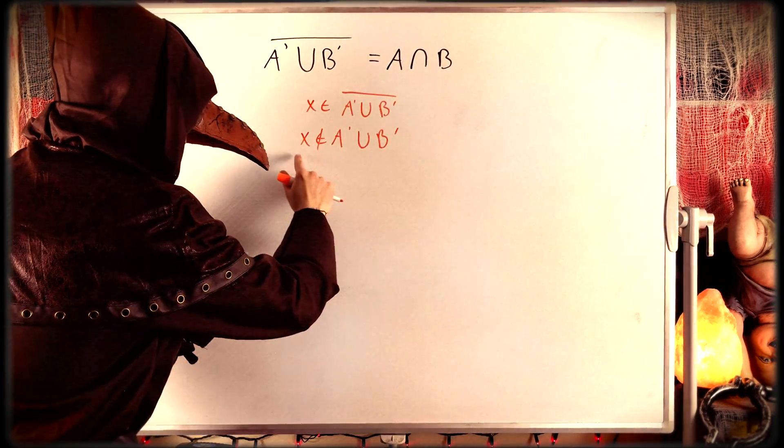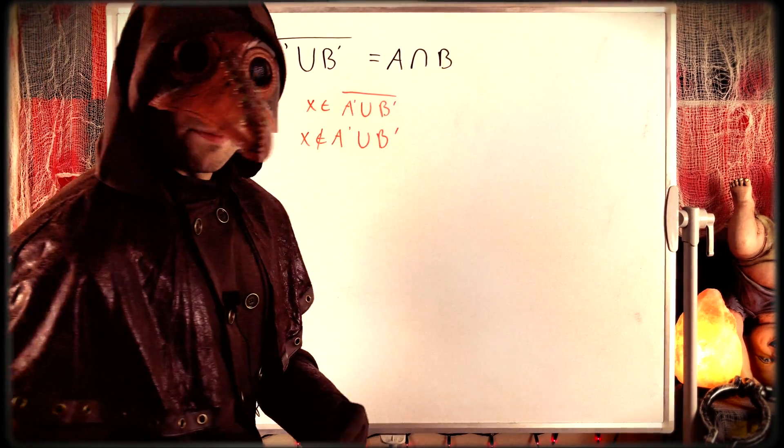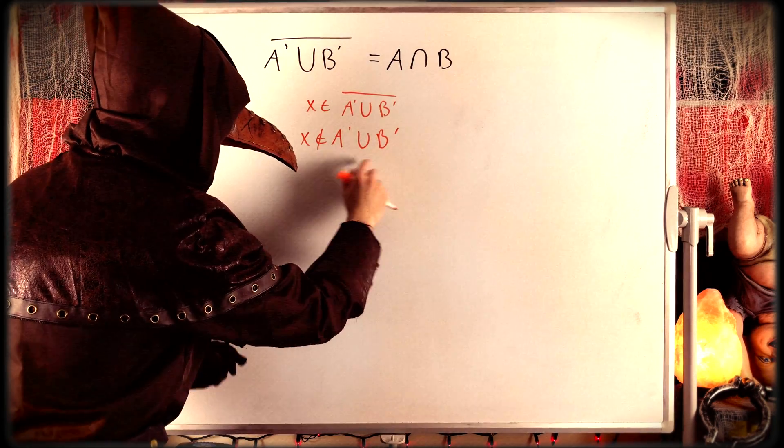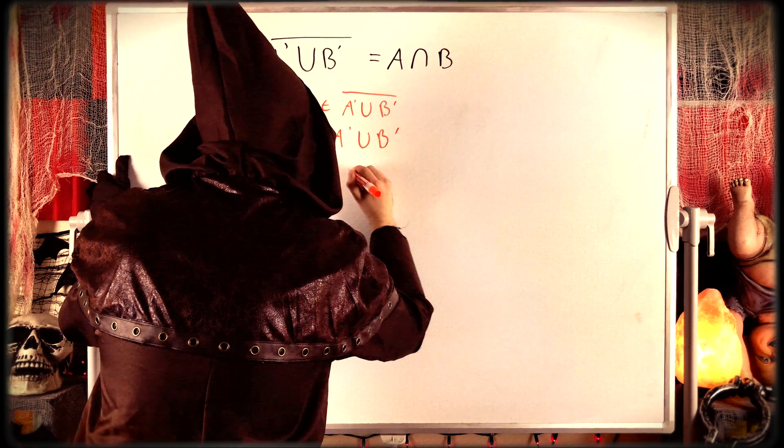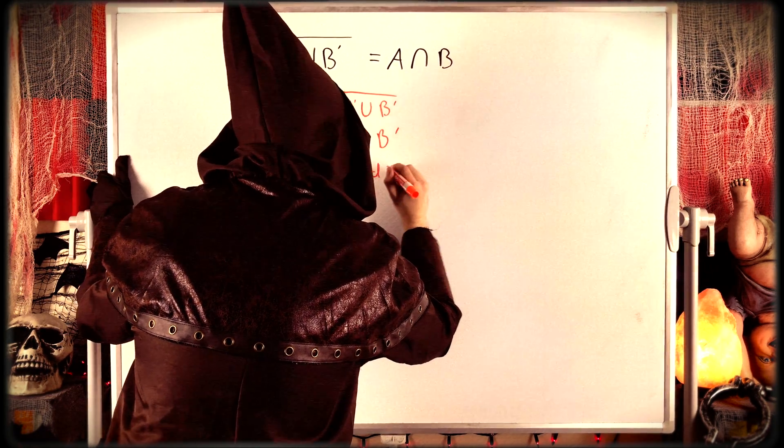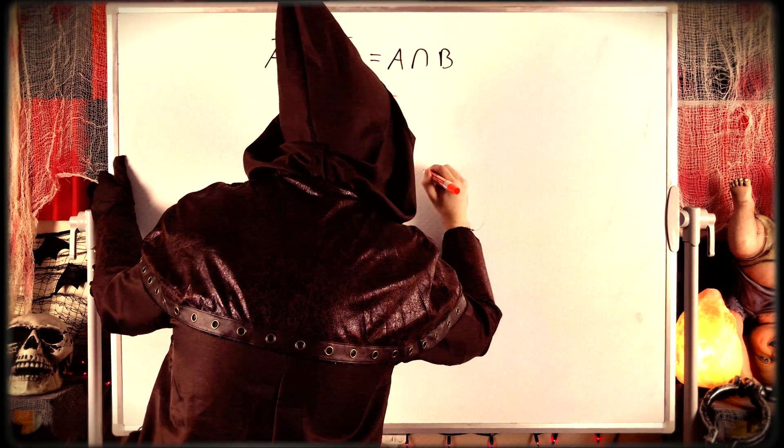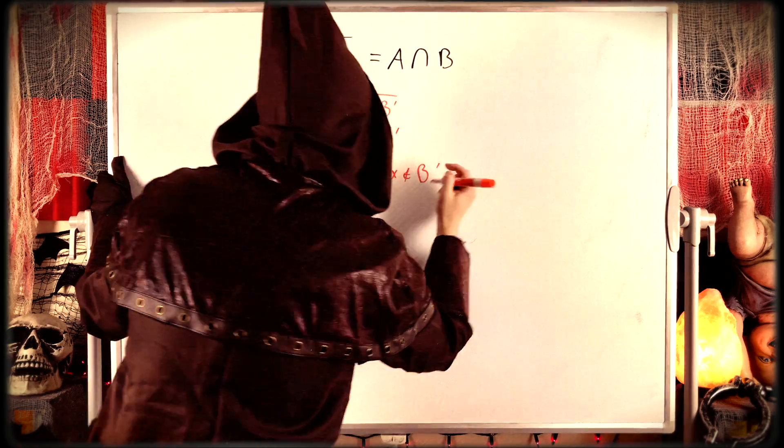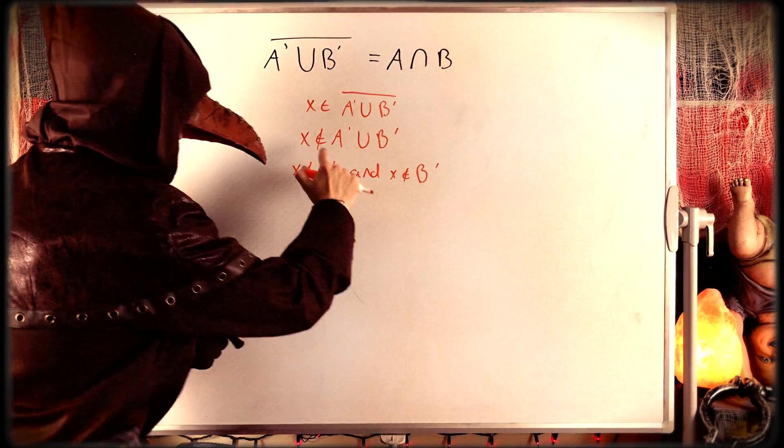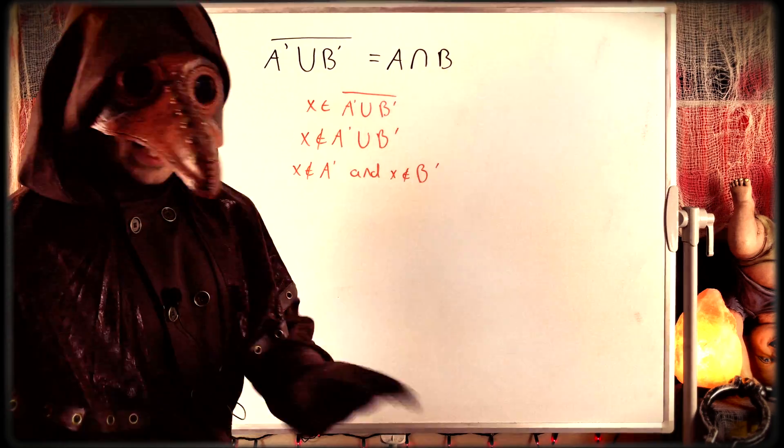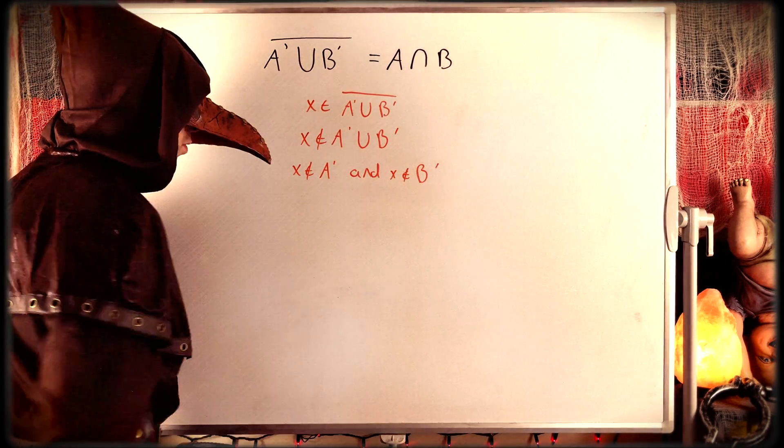And if x is not in this union, it must not be in either of the components of this union. This must mean that x is not an element of the complement of A and x is not an element of the complement of B. If it was in either of the complement of A or the complement of B, then it would be in the union. But it isn't in the union, so we can conclude both of these things.